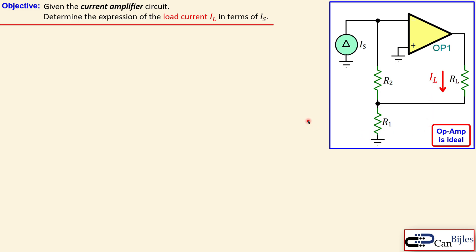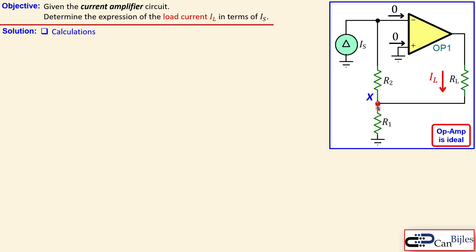We assume the op-amp is ideal. Before we jump to the calculation, let's first designate the ideal op-amp characteristics. The input currents at the input terminals of the operational amplifier are zero because the ideal op-amp has infinite input impedance, so we can say both input currents are zero. We also designate the nodes here — node X and node Y — so we can proceed with our analysis.